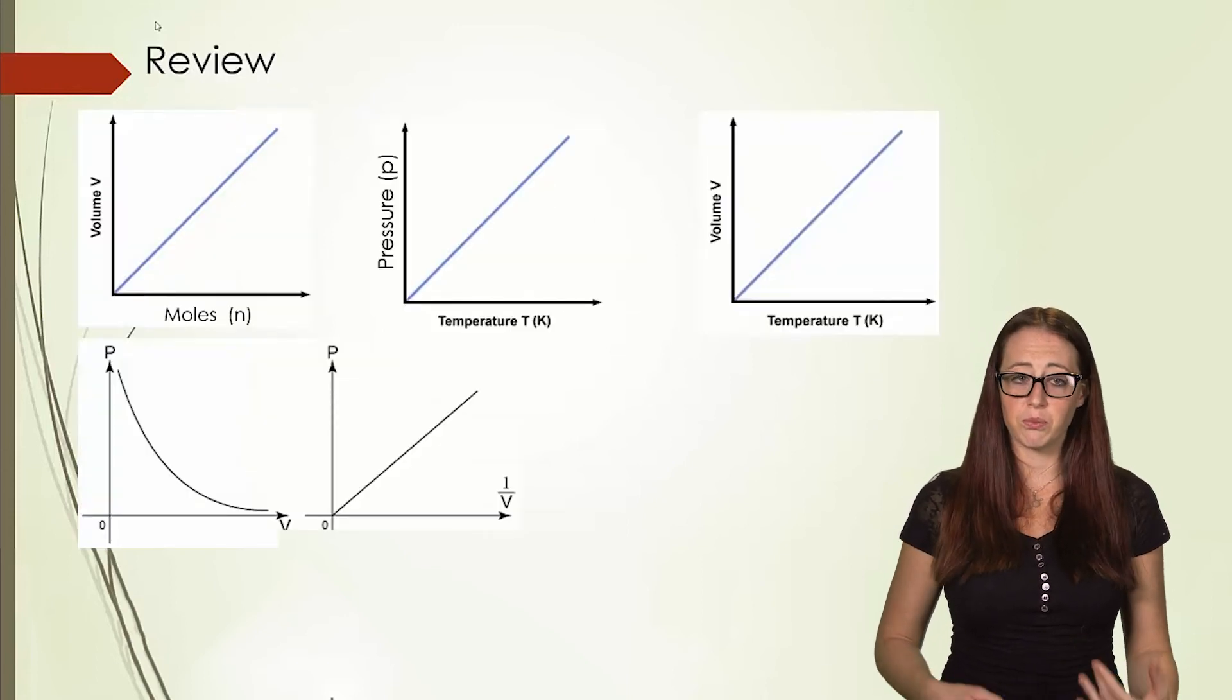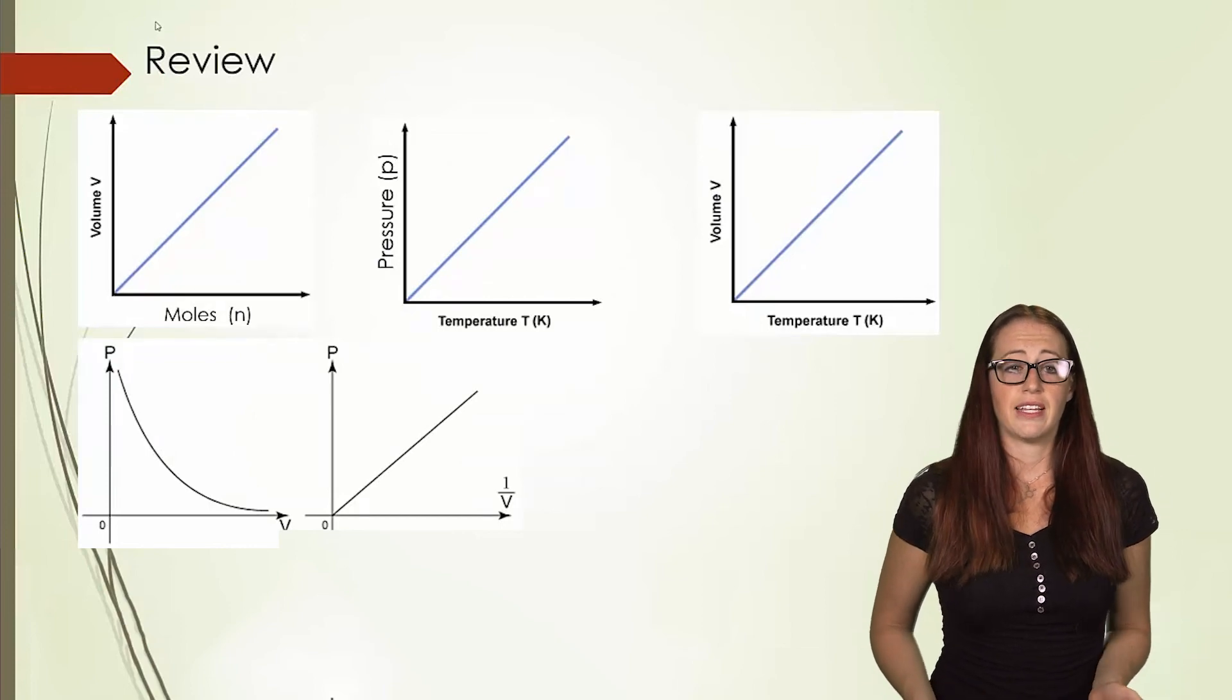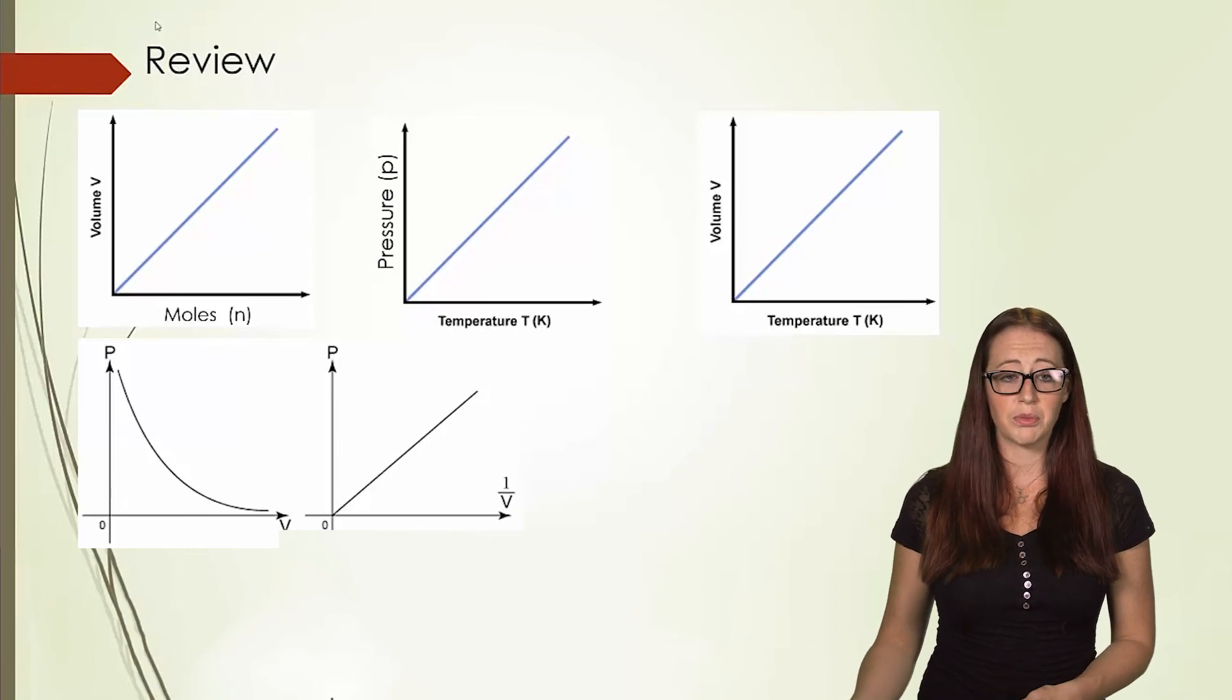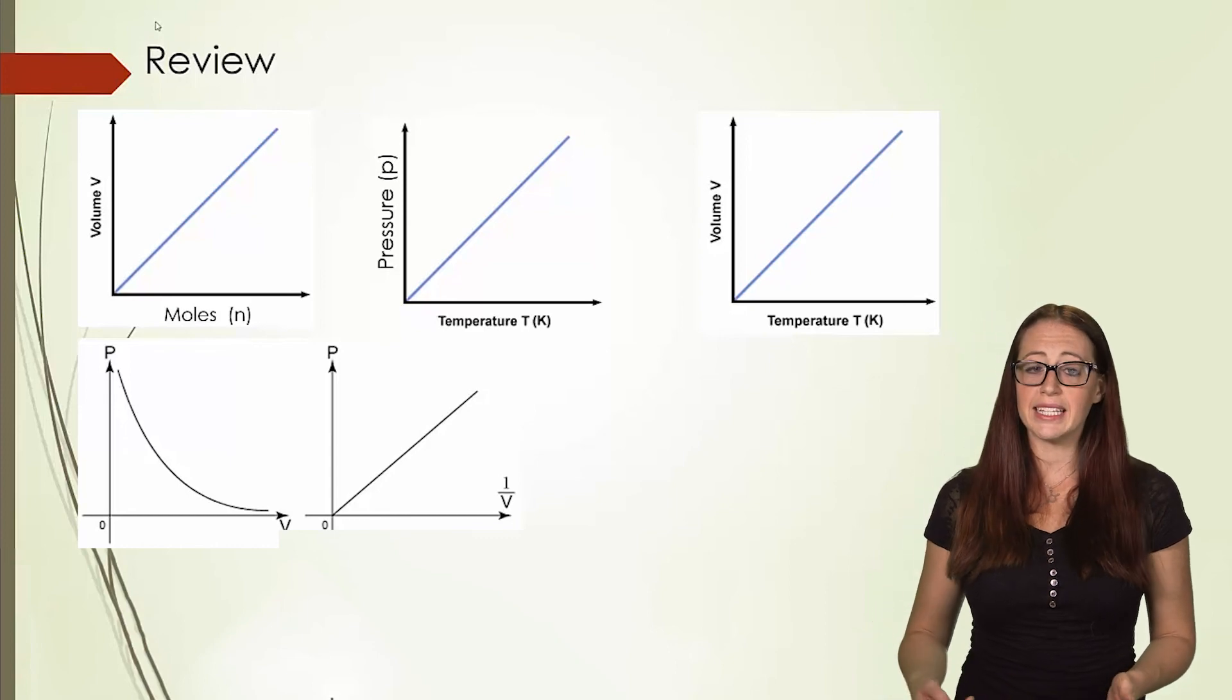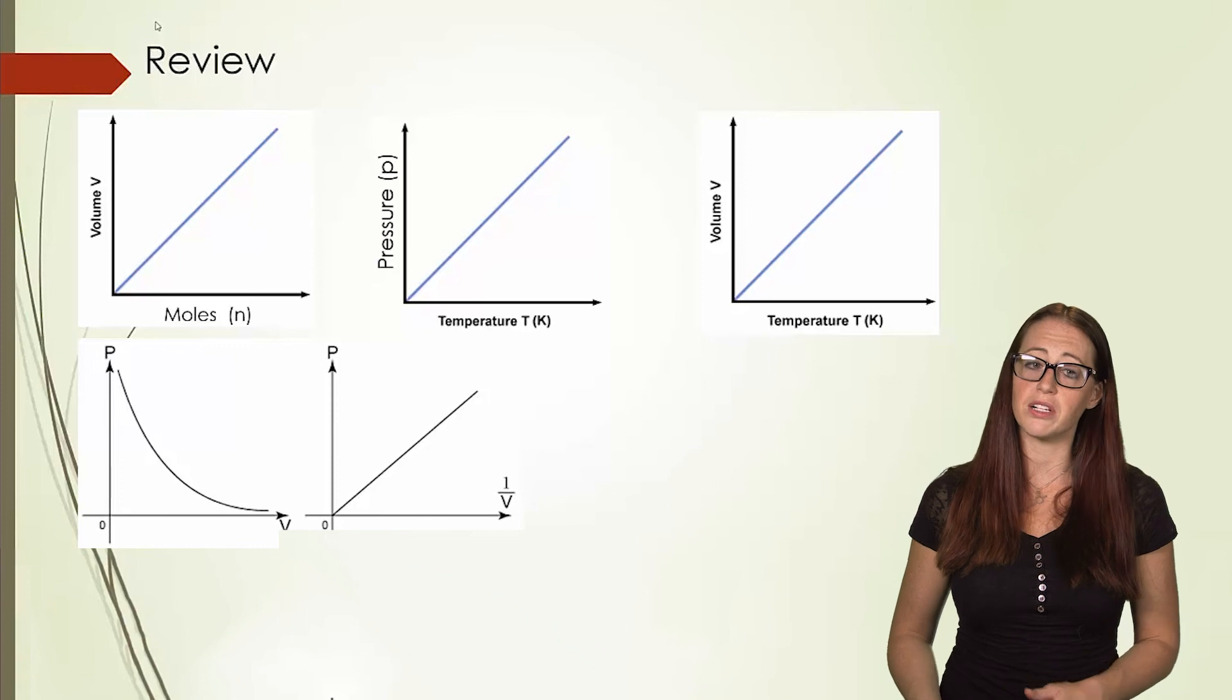And please make sure that you can replicate each of these graphs. In most of the cases, it's simply a linear graph. The pressure and volume one was a bit different because it was inversely related. We were able to make it linear by instead on the x-axis of using V, using 1 over V.